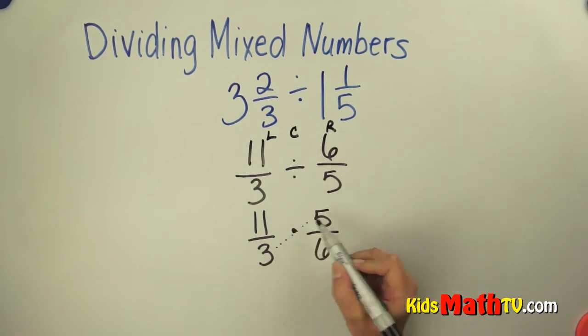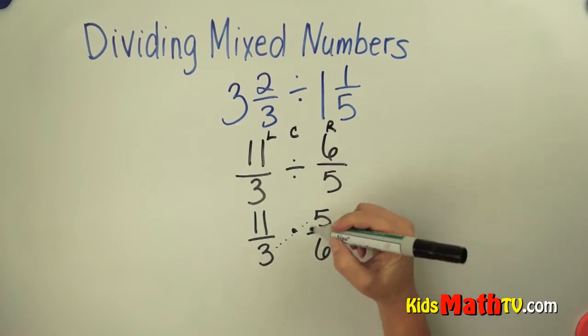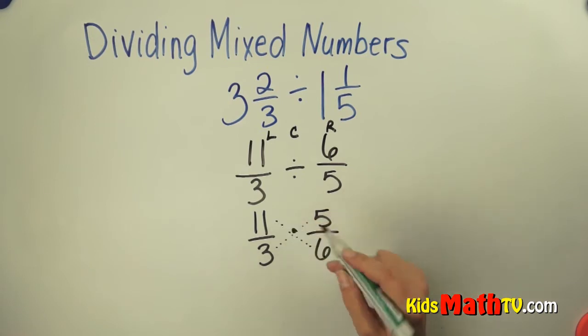Then I can check to see if I can cross-cancel. Is there a number that will divide 3 and 5 evenly? Nope. Check 6 and 11. Is there a number that will divide 6 and 11 evenly? Nope. Those will not cross-cancel at all.